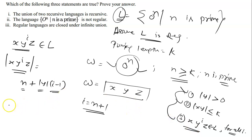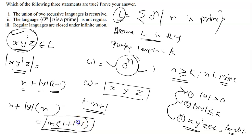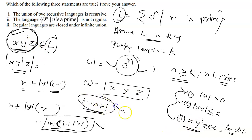Now take i = n + 1. Then the length becomes n + n × |y| = n × (1 + |y|). This string x y^i z has a composite length — n multiplied by (1 + |y|) — and therefore cannot belong to our language L, which requires the length to be prime. So the third condition is violated for i = n + 1, the pumping lemma is violated, and our assumption is wrong. L is non-regular.